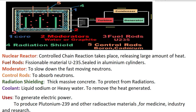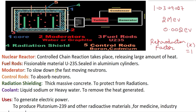Along with the radiation shielding, core, control rods, nuclear moderator, and fuel rods, you also have a steam generator, a turbine, a condenser, and a generator. Now let us discuss the working of the nuclear reactor.